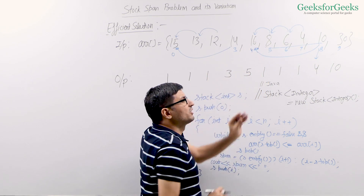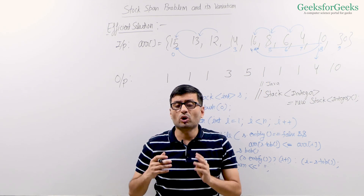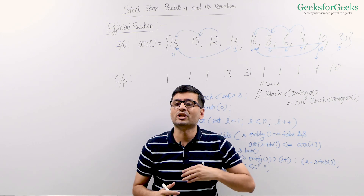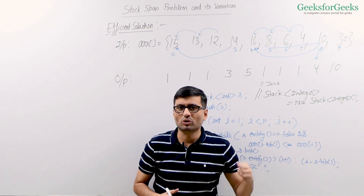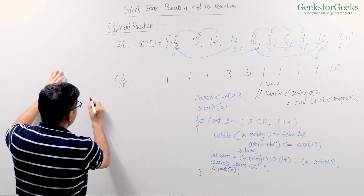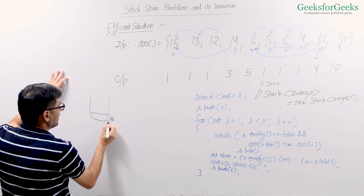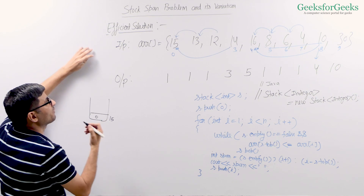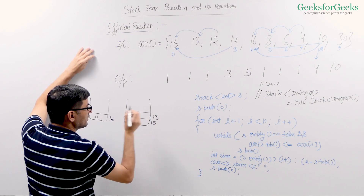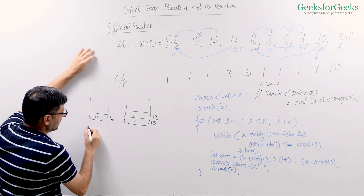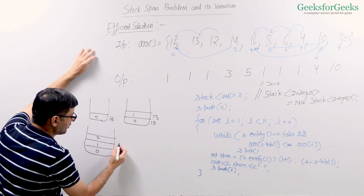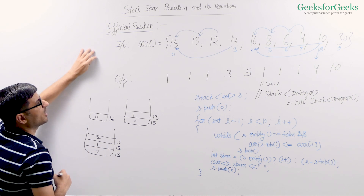Why do we keep smaller elements in the stack? Because if there is an element smaller than 8, then 8 is the previous greater element for it. We also need to keep 16 in the stack because there might be elements between 8 and 16. So if 9 comes, the span of 9 is going to be determined by 16. The basic idea is: for every element, we compare it with the top of the stack. If this element is smaller than the top of the stack, we push it. If it is greater, we remove the top and keep removing all smaller elements.